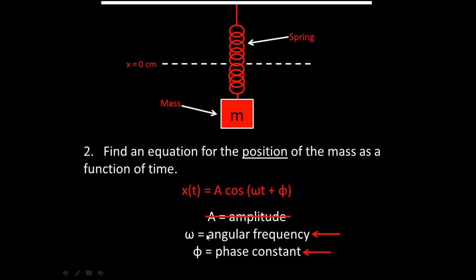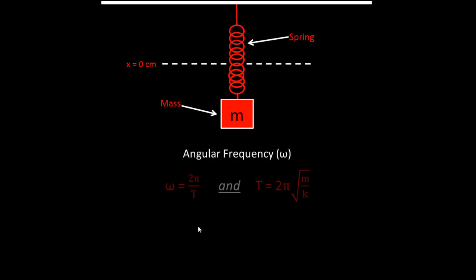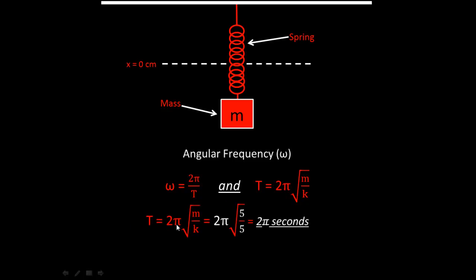Angular frequency omega equals 2 pi over T, where T is the period. Period equals 2 pi times the square root of m over k. Plugging in m equals 5 and k equals 5 gives T equals 2 pi times the square root of 1, which is 2 pi seconds. Therefore, omega equals 2 pi divided by 2 pi, which equals 1 radian per second.